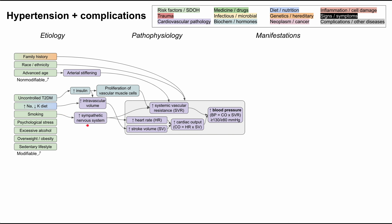Smoking releases nicotine, which stimulates your sympathetic nervous system. Hormones like epinephrine and norepinephrine directly increase heart rate and systemic vascular resistance — they make the heart beat faster and cause arteries to clamp down and tighten. Psychological stress has a similar effect. You might experience a faster heartbeat during a panic attack or fight-or-flight state. When this happens chronically with persistent sympathetic activation, it contributes to chronic high blood pressure.